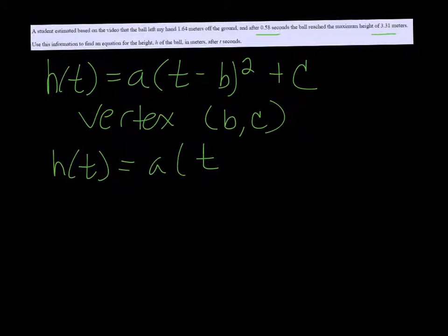So it would be h(t) equals a times (t minus 0.58) squared plus 3.31. So we just need to find a.